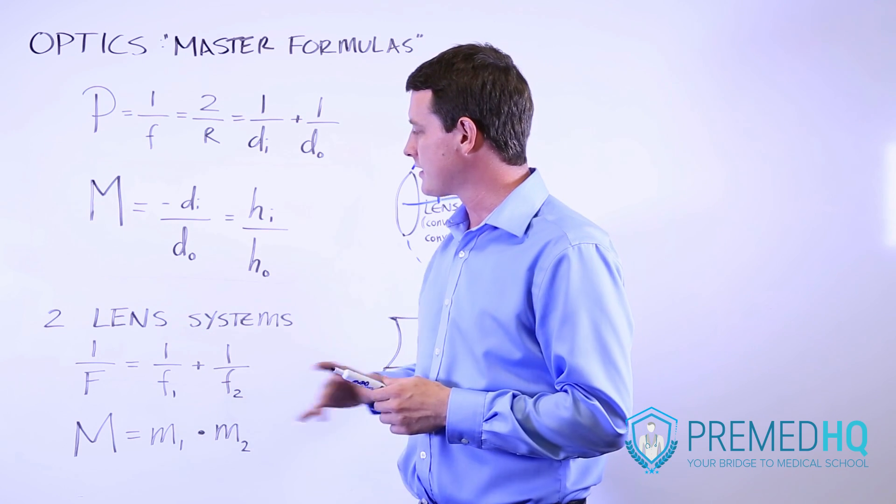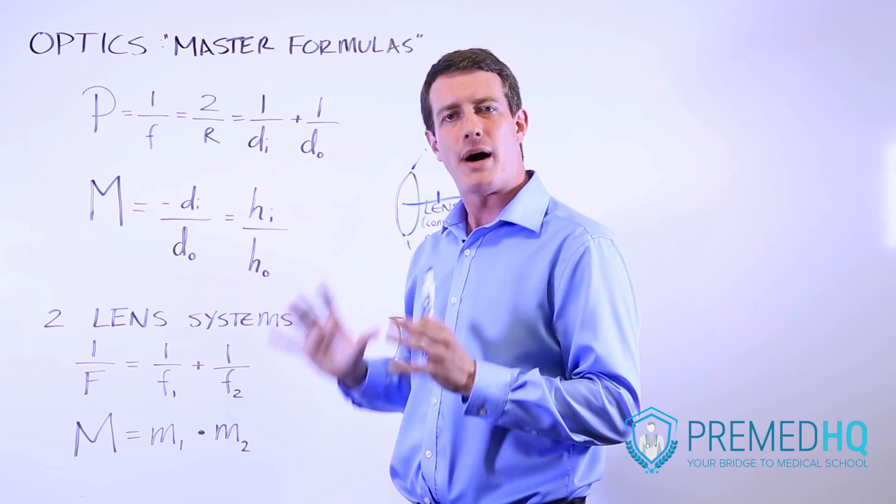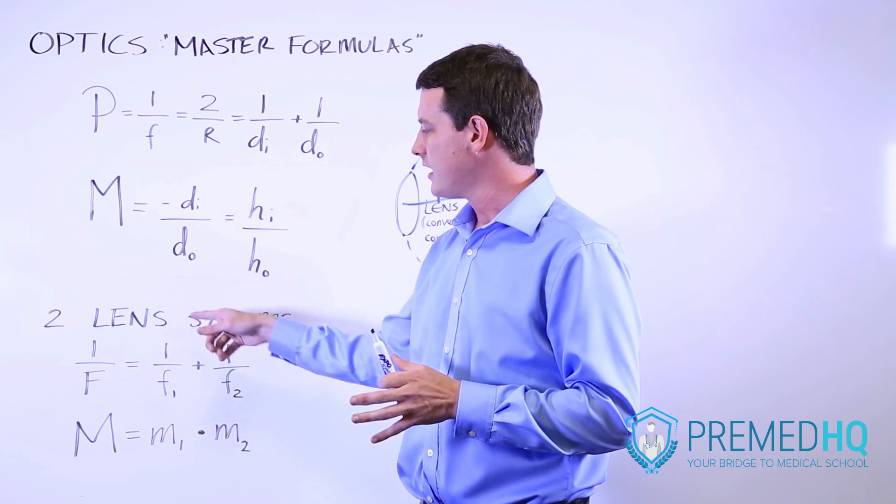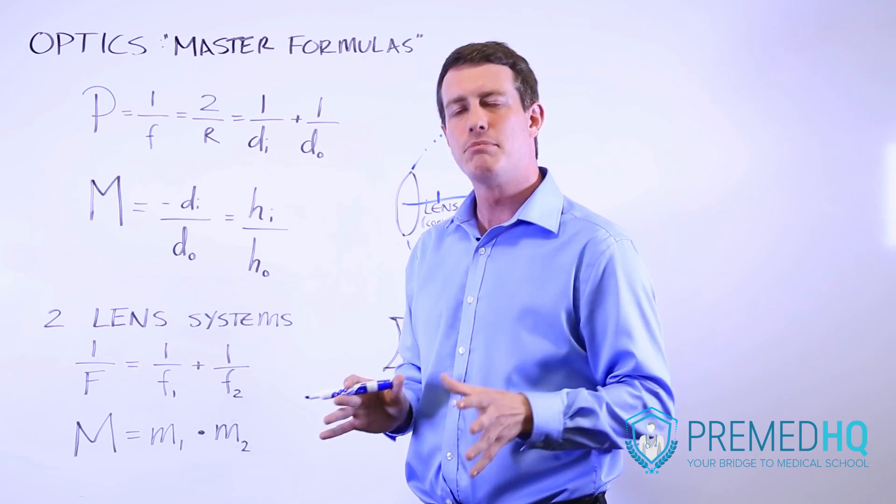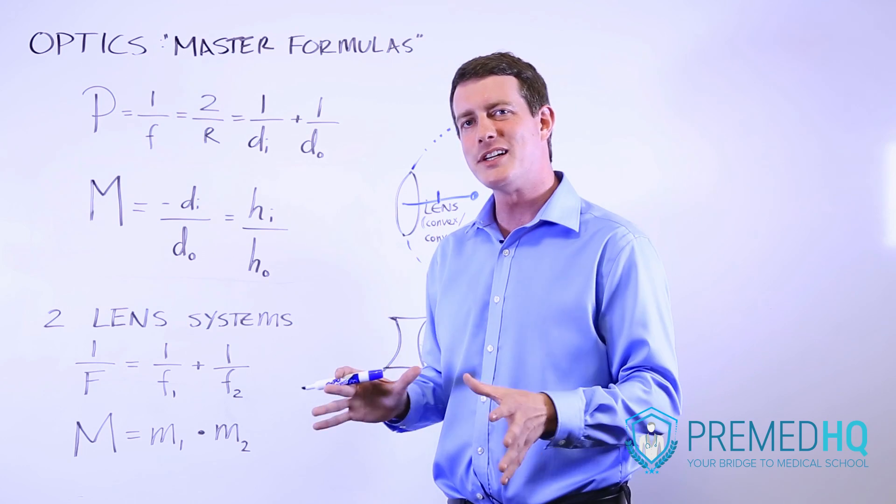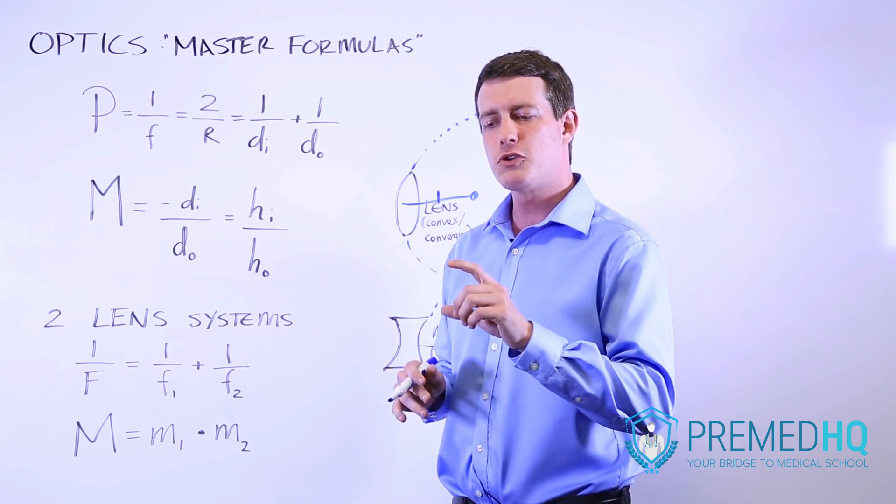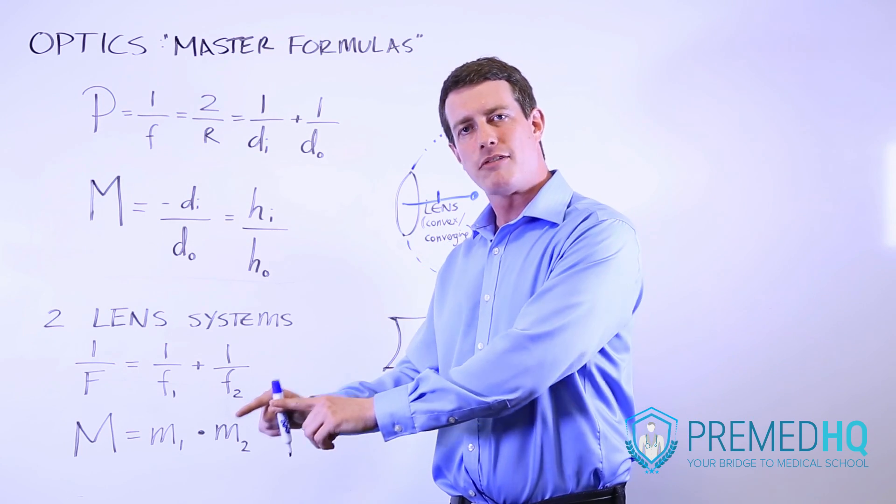Now for any two lens system, to combine the focal distances you add the reciprocals. This is a very important distinction: whenever you're dealing with a two lens system, you have to treat the image produced by the first lens as the object of the second lens.